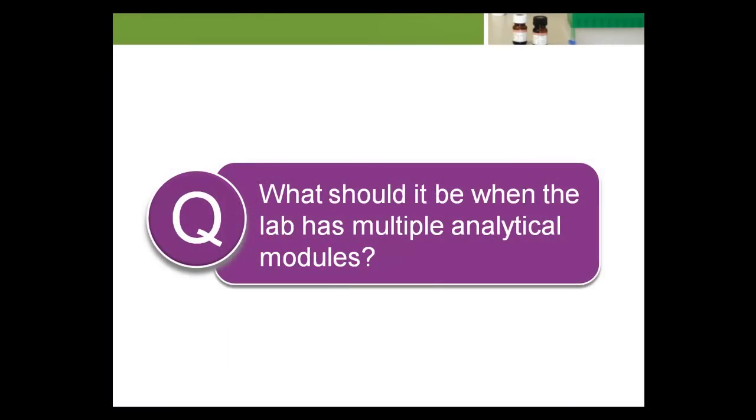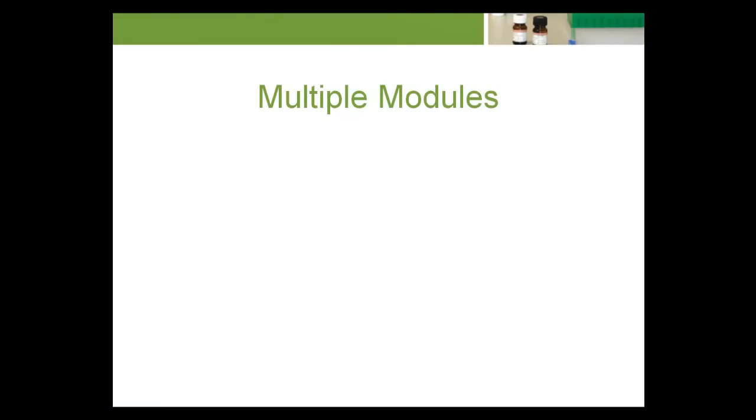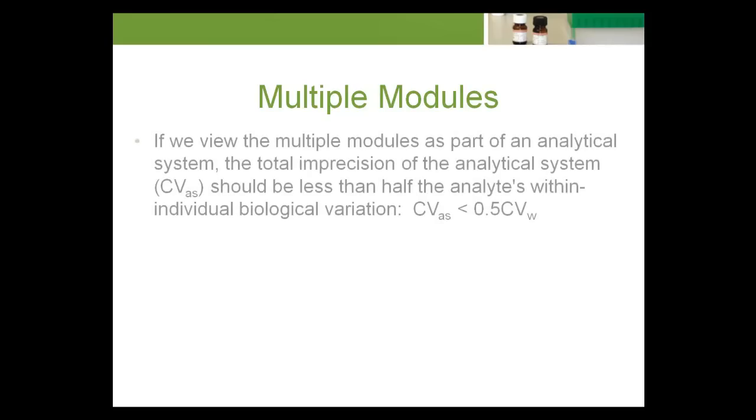If analytical imprecision should be less than half within-individual biological variation for a lab with a single instrument, what should it be when the lab has multiple analytical modules? Fortunately, the straightforward answer is the same. If we view the multiple modules as part of an analytical system, the total imprecision of the analytical system should be less than half the analyte's within-individual biological variation, CVA less than 0.5 CVW.